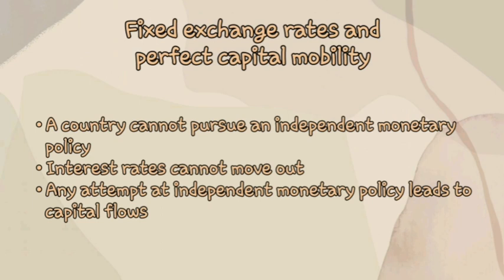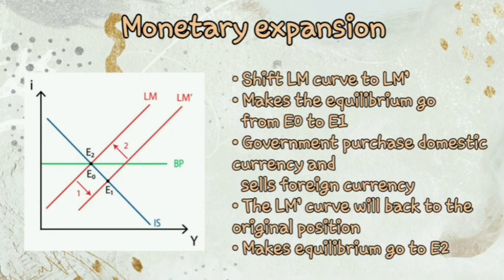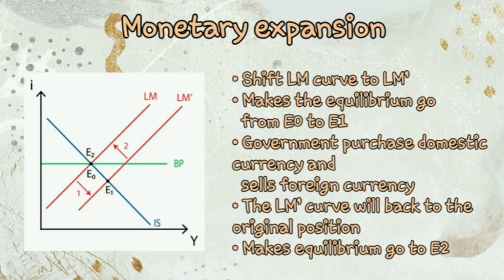Under fixed exchange rates and perfect capital mobility, a country cannot pursue an independent monetary policy. Interest rates cannot move out of line with those prevailing in the world market. Any attempt at independent monetary policy leads to capital flows and a need to intervene until interest rates are back in line. An expansionary monetary policy shifts the LM curve to LM prime, moving equilibrium from E0 to E1. However, since we are below the BP curve, the economy has a balance of payments deficit. The government must purchase domestic currency and sell foreign currency, dropping the money supply and shifting LM prime back to its original position, moving equilibrium to E2.